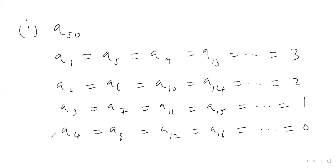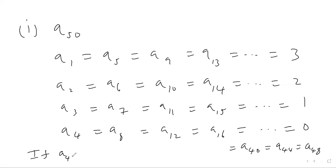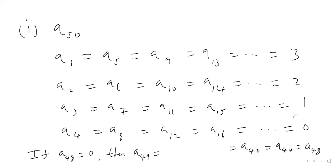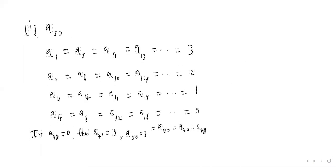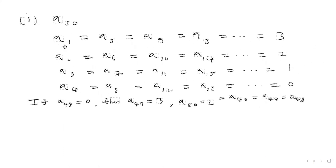The fourth, eighth, twelfth, sixteenth terms are all in the four times table — they all equal zero. So a40 is zero, a44 is zero, and a48 is zero because 48 is in the four times table. Since a48 is zero, the next term a49 must go back to three — because in the periodic sequence after zero comes three. Then a50 is the next number in the sequence, which is two. So the 50th term is two.